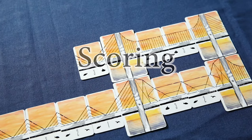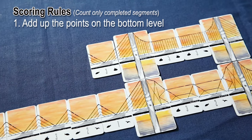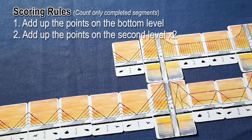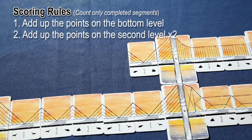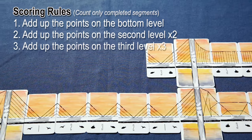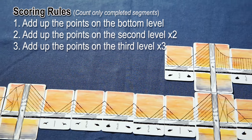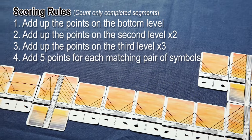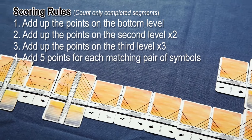It's time to score our bridges. First, add up all the points on the bottom level of your bridge. Second, add up all the points on the second level of your bridge and multiply them by two. Third, add up all the points on the third level of your bridge and multiply them by three. Finally, add five points for each matching set of symbols. Now let's see that in action.